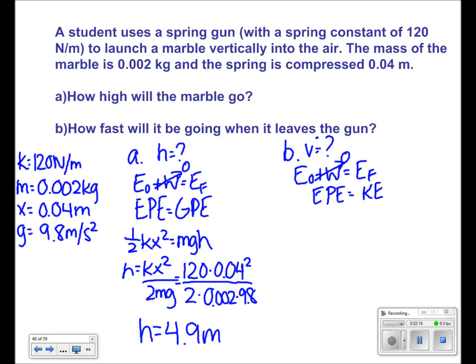Thus, one-half kx squared equals one-half mv squared. Since we have one-half on both sides, we can cross them out. And since we're solving for v, we can get that v squared equals kx squared over m by dividing both sides by m.